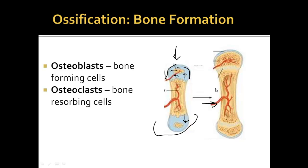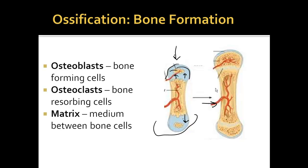Osteoblasts and osteoclasts are always working in tandem to keep your bone replenished and new, because everything in your skeleton does replace itself over the course of several years. The biggest difference between bone and cartilage is something called the matrix — the in-between stuff. In pre-ossified bone the matrix hasn't solidified yet; the matrix is like a gel. Whereas in a completely ossified bone, the matrix has been calcified — filled with lots of calcium to make it tough and harder.